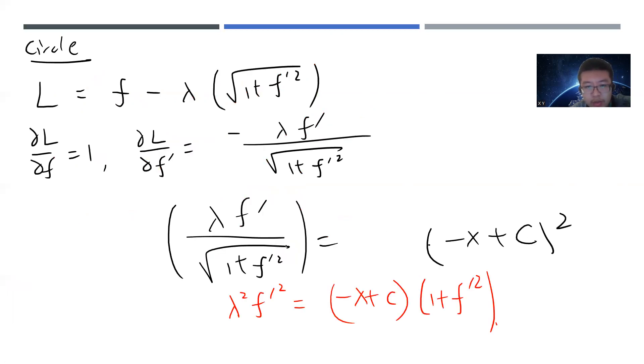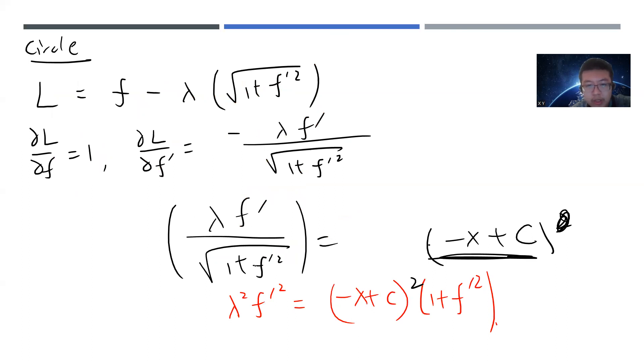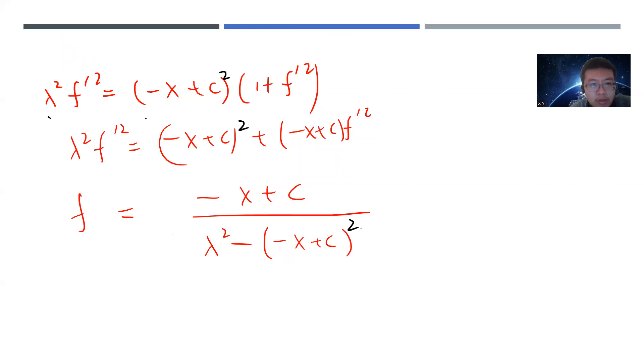Okay. So F prime square equals to minus X plus C divided by lambda square minus minus X plus C take a square. Okay. So let's see. And we just take the square root. Oh, by the way, I'm stupid. So when you do these things, right, you have this. Oh, you need to square. You can square this. Okay. So this should be square. Oh, sorry. I'm stupid. So you should take square, right? Because this is minus X plus C, but when we do a square both sides, so we got this.